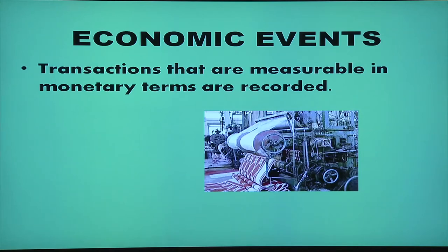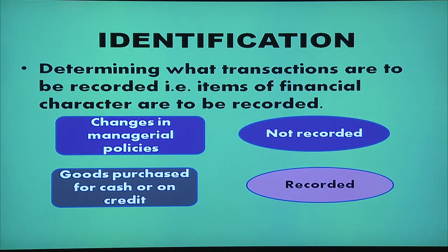In this definition, we will record only those transactions that can be expressed in terms of money — that is, we will record only economic events. Transactions that are measurable in monetary terms are recorded in the accounting process. Items of financial nature are recorded, such as goods purchased for cash or on credit, because you can express that in financial terms. Changes in managerial policies or appointment of efficient staff cannot be recorded because you cannot express those in terms of money.